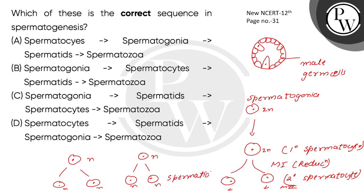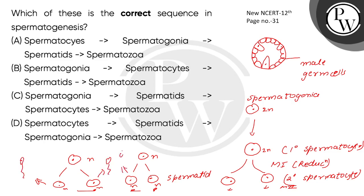The spermatids then undergo spermiogenesis to become motile sperm. From one primary spermatocyte, 4 motile sperm are ultimately produced. These motile sperm cells are the final product, also referred to as spermatozoa.